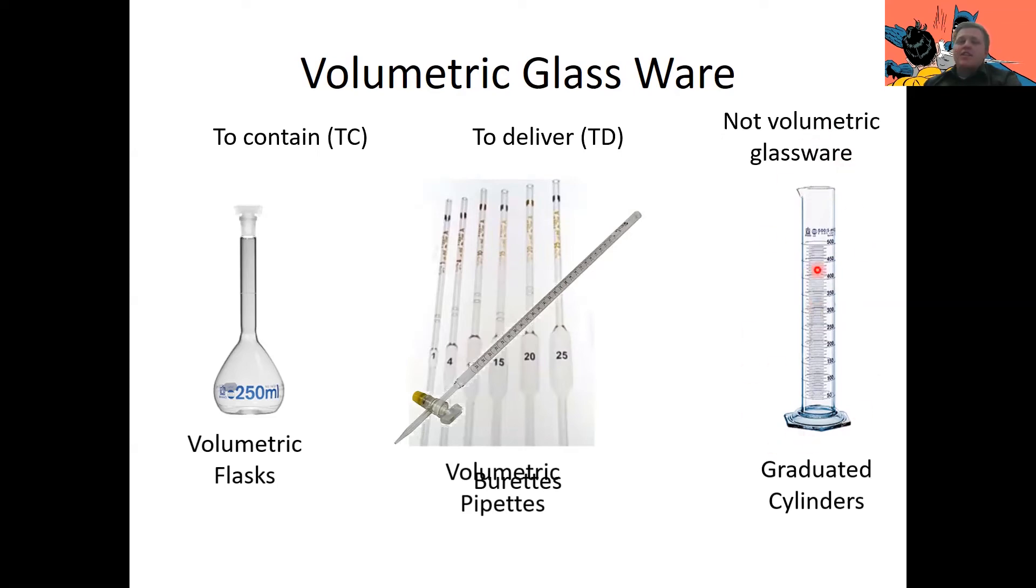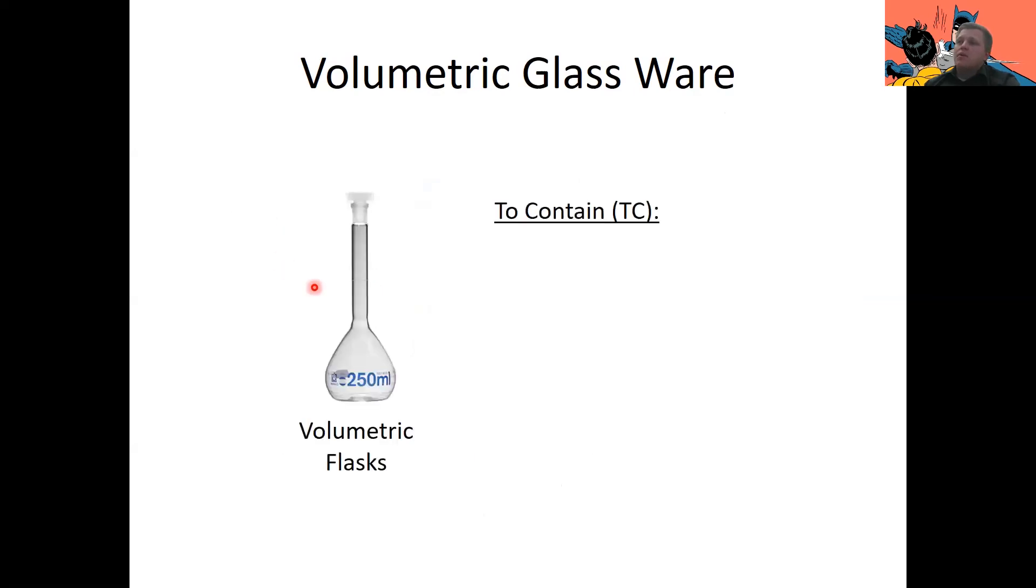So graduated cylinders are actually not considered volumetric glassware. The reason for that, well at least one reason for that, is that their gradation lines aren't precise enough. So the gradation lines on most graduated cylinders are at most one mil apart. Whereas if you're working with a burette, then those gradation lines are going to be at most 0.1 mils apart. Additionally, graduated cylinders usually aren't made with as high of error tolerances or have higher error tolerances. So they have more uncertainty in them than other volumetric glassware. So they get thrown out. But let's talk about to contain and to deliver types of glassware. We'll start with to contain.